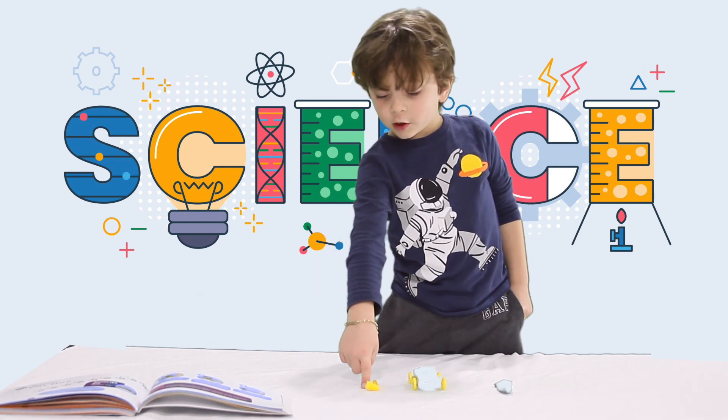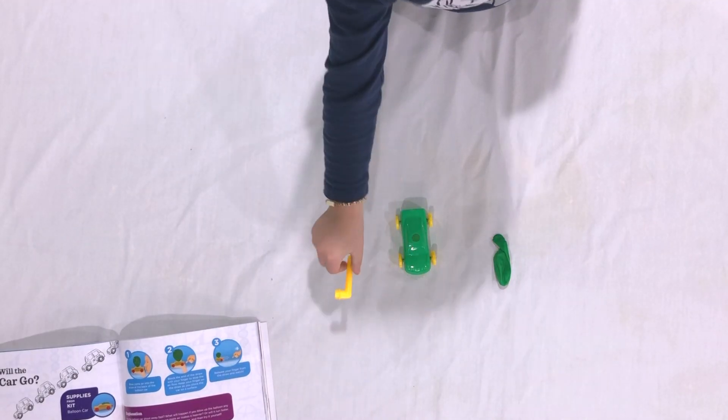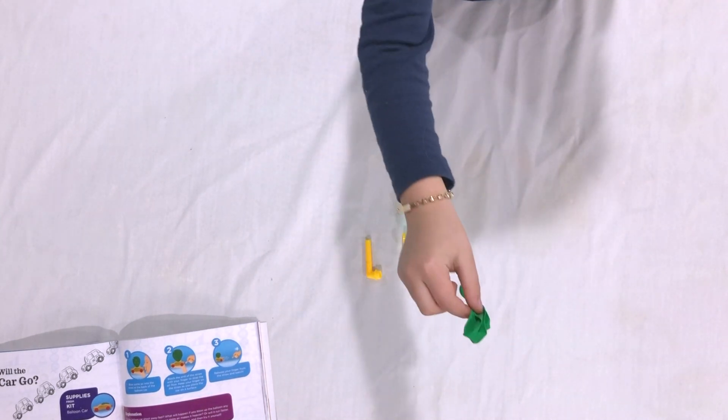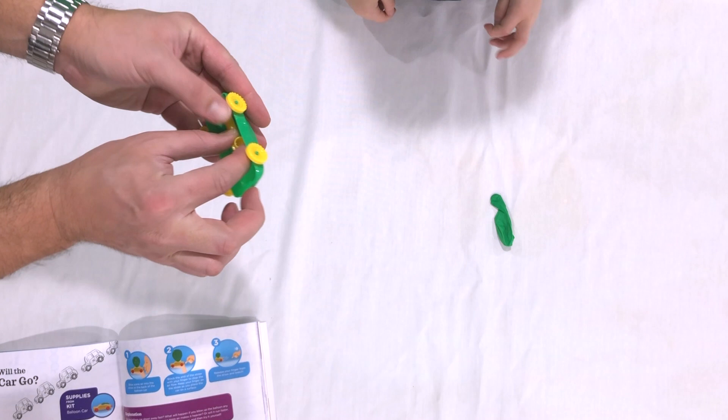First you need this piece here. The car and the balloon. Now let's get started. Ask an adult to help you. Then you have to attach the balloon on the top.